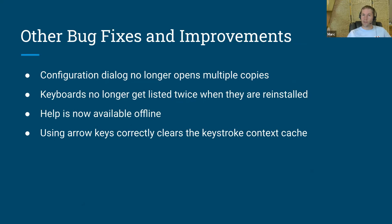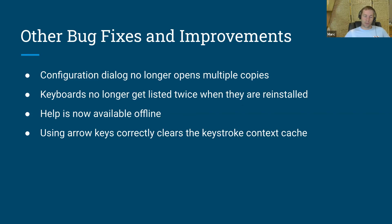We've made a number of other bug fixes and improvements. We're currently doing mostly maintenance as we don't have a dedicated macOS developer. The most serious issues addressed include: the configuration dialogue would open duplicate copies when adding a new keyboard; keyboards could be listed twice and couldn't be removed; help now works even if you're offline; and using arrow keys in a document now correctly clears the keystroke context cache, preventing incorrect output when typing in a new part of your document.